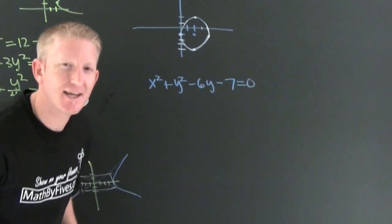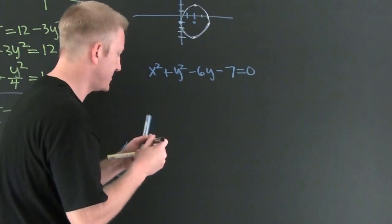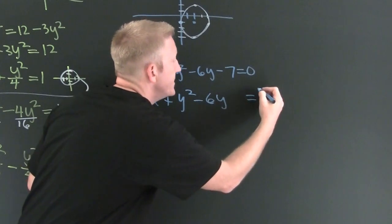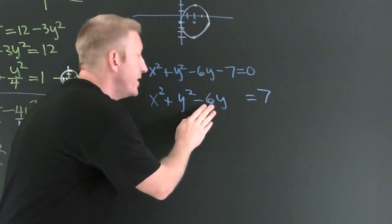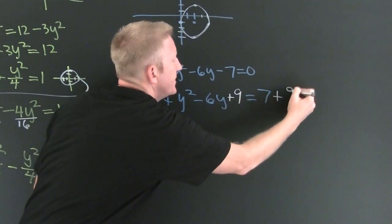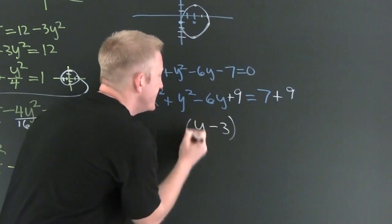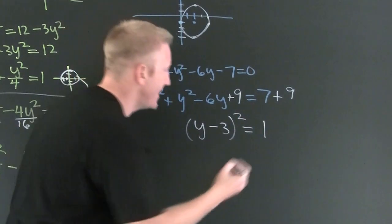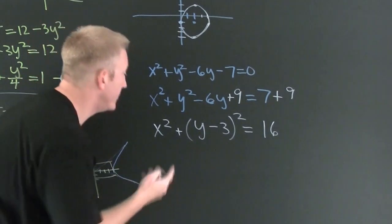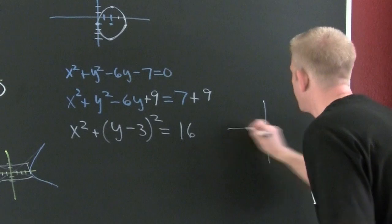This one is really in disguise. Put it in standard form — complete the square. Leave x alone. Plus y squared minus 6y equals 7. Take half the middle coefficient squared and add to both sides. Half of 6 is 3, squared is 9. Complete the square: this is (y minus 3) squared. That's equal to 16, plus x squared. It is in standard form for a circle.